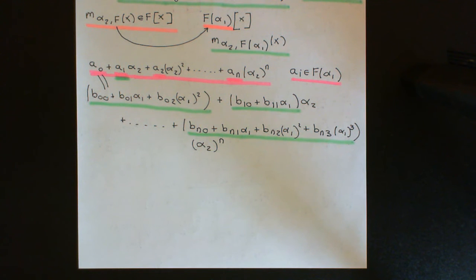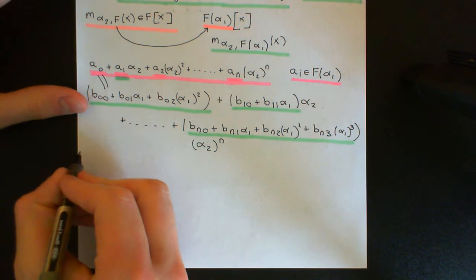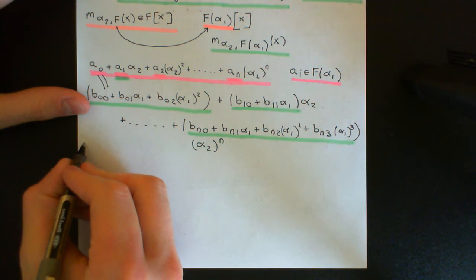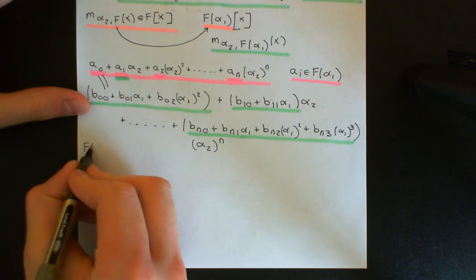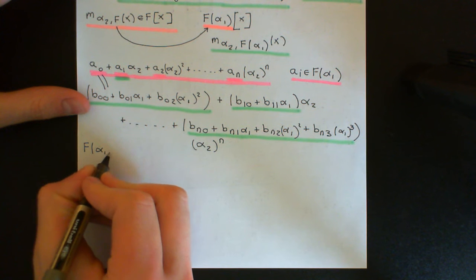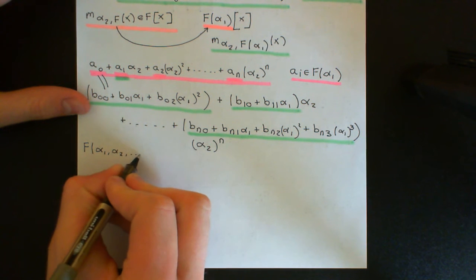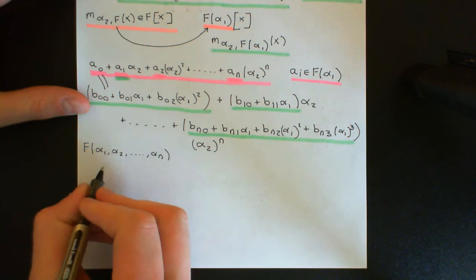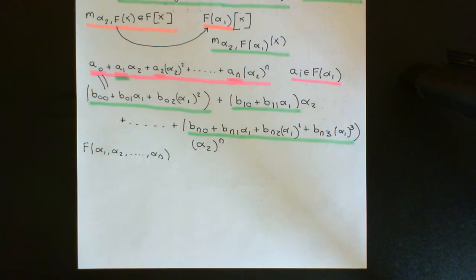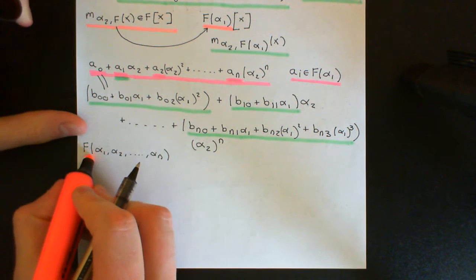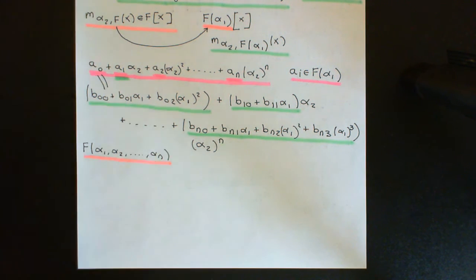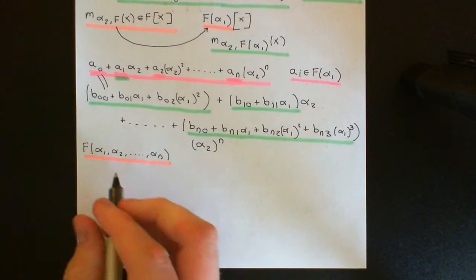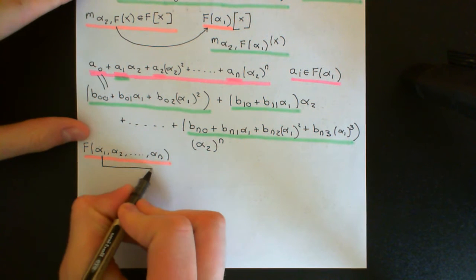In the previous video we just did it for two generators. We are now going to consider the field extension of F generated by α₁, α₂, all the way up to αₙ. All of these elements we are now going to assume are algebraic over F — none of them are transcendental.